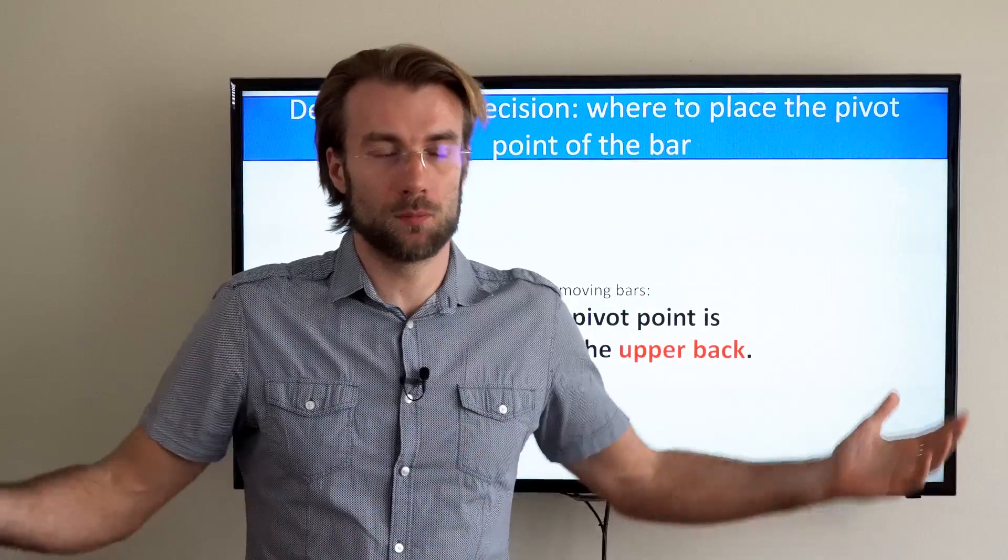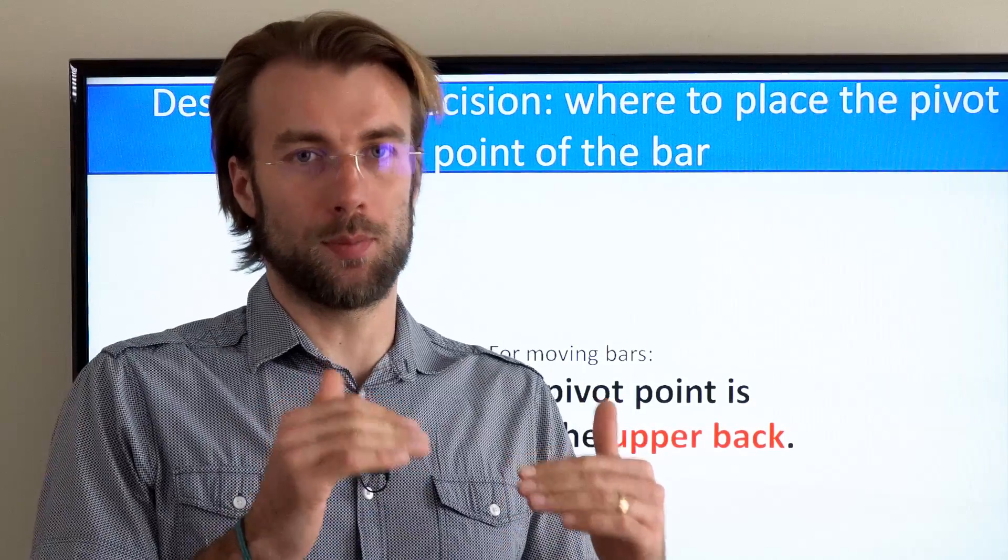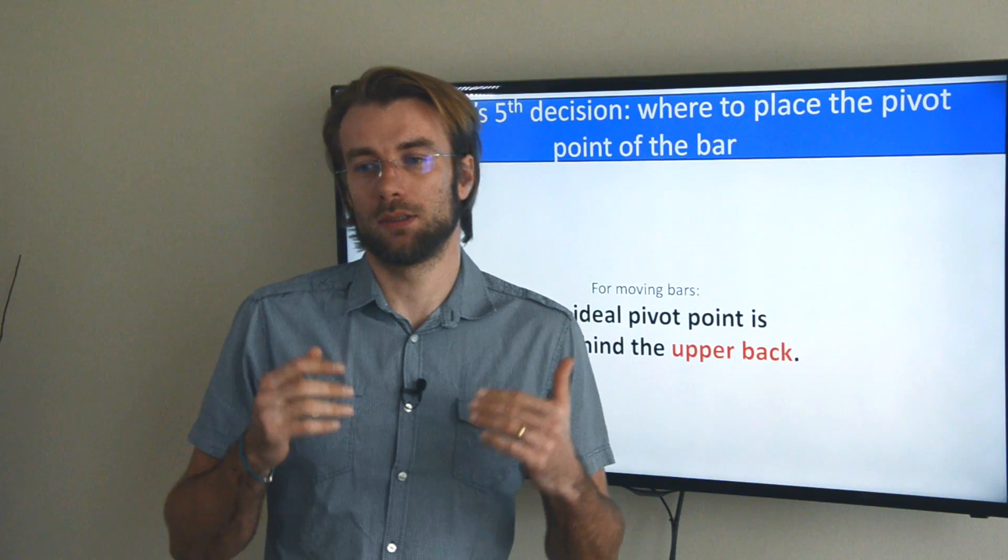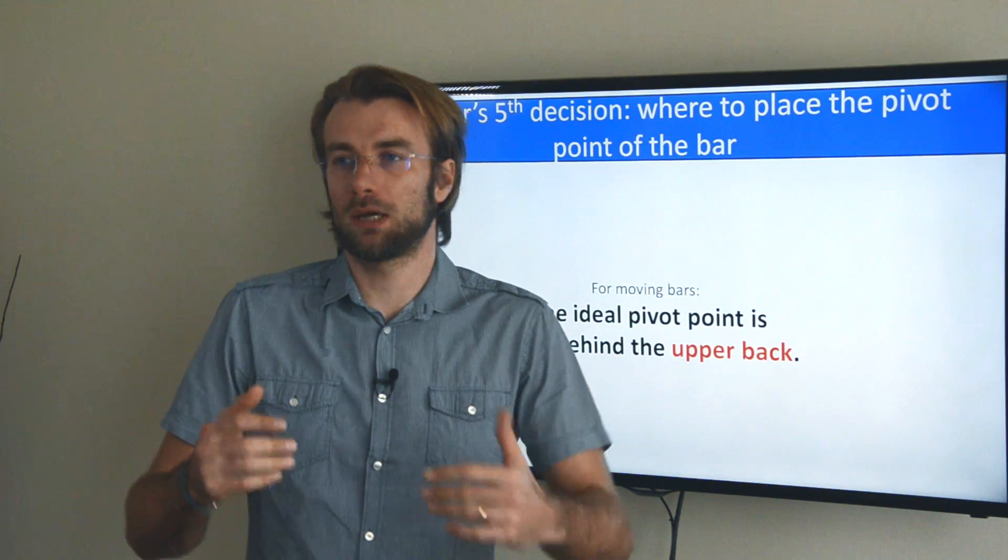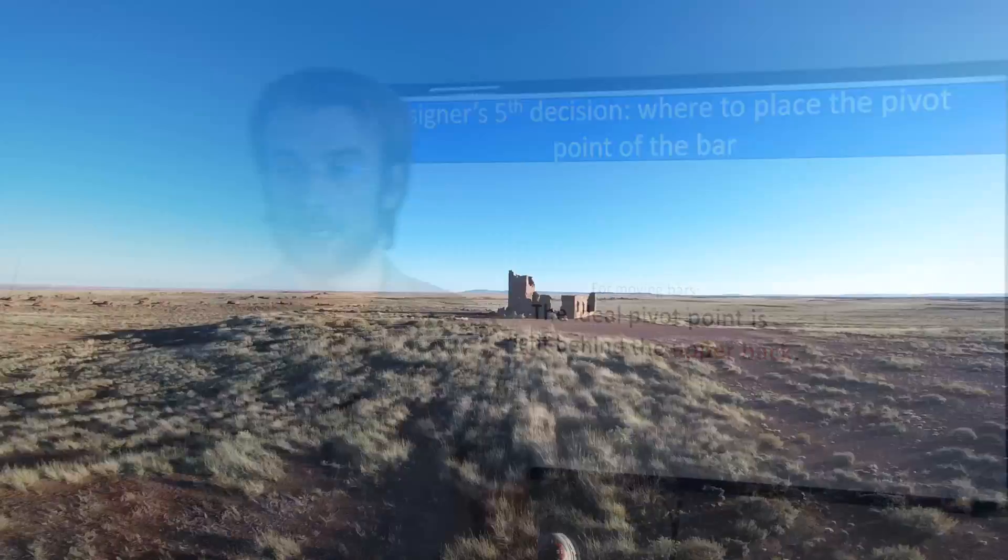What is the solution? Well it's very simple. We need to have the pivot point of the bar around your upper body. That is if you lean back you lean directly into the pivot point of the bar and the whole paramotor will not lean back.